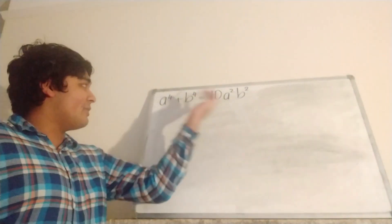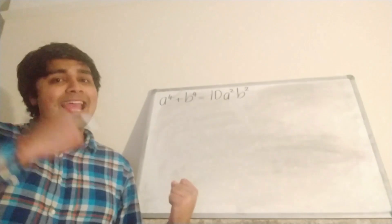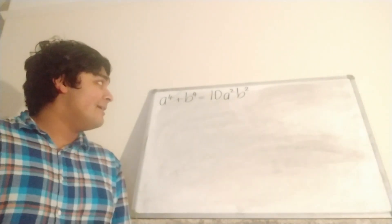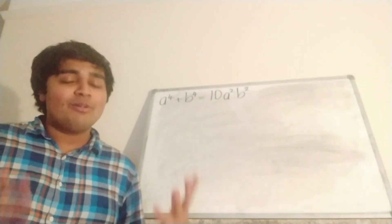Because of the symmetry of this equation here, the exact same thing holds for B. So if B is a multiple of 3, then A is also a multiple of 3. So if either of them are a multiple of 3, then both of them are multiples of 3.